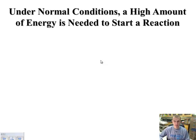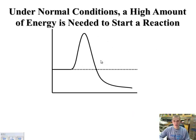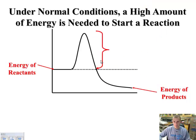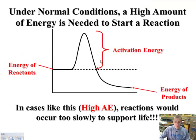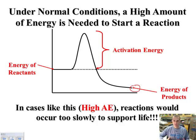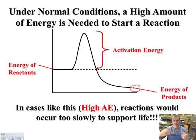Now, under normal conditions, a high amount of energy is needed to start a reaction — heat, electricity, whatever it is to get the reaction going. If you look at this graph here, what you will notice is there is a high activation energy that occurs. This is the energy from your reactants in the initial process. With this high activation energy required to get the bonds broken, you have a very low output of energy at the end product. In cases like this, reactions would occur so slowly that life would essentially be in slow motion. This activation energy is really too high for all the chemical processes to occur in our body fast enough.